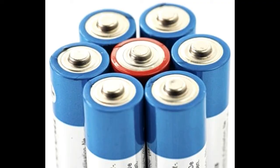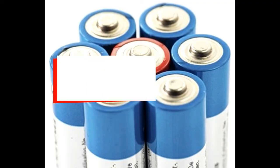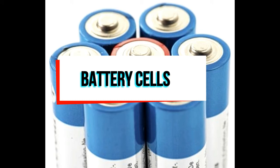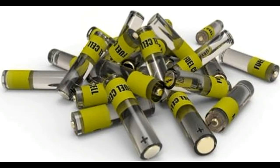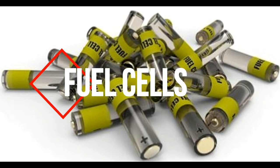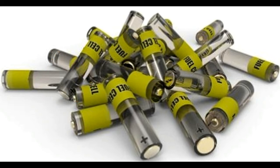In batteries and fuel cells, potassium hydroxide dissolved in water works as an electrolyte in alkaline, nickel cadmium, and manganese dioxide zinc batteries. It also acts as an electrolyte in fuel cells. KOH solutions are better conductors of electricity than NaOH solutions.